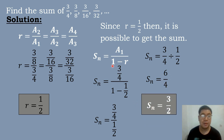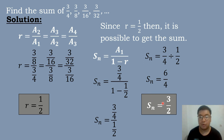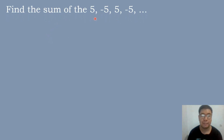So the sum of 3/4, 3/8, 3/16, 3/32, and so on is equal to 3/2. Let's have our third example. Find the sum of 5, negative 5, 5, negative 5, and so on.